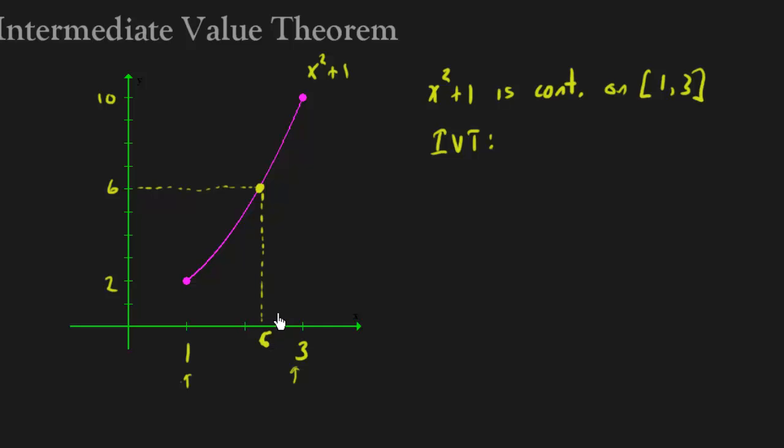which we'll call c. Now I can actually figure this out by just setting 6 equal to x squared plus 1, and then solving this, so then x is going to be root 5, so right here that's the square root of 5. And I can do this for any single y value between 2 and 10, if I chose 9, then I'll go right here, and then I'll drop down, and again, I'm in between 1 and 3.